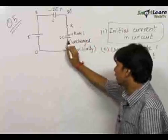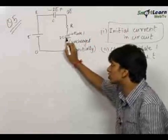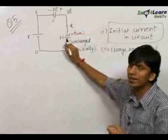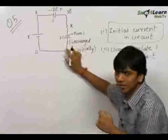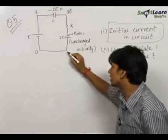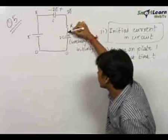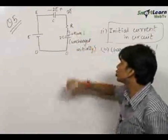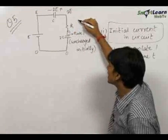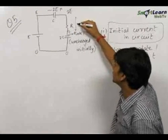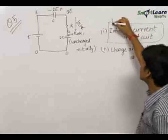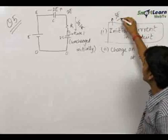Therefore the potential at this point is equal to 3E. Now this capacitor is initially uncharged, and since there is a resistance in the circuit, it will take some time for charge to develop in this capacitor. So just initially, the potential difference across this capacitor will be zero. Therefore the potential difference across the resistance is 3E minus 0, equal to 3E, and the initial current through the resistance will be equal to 3E/R.